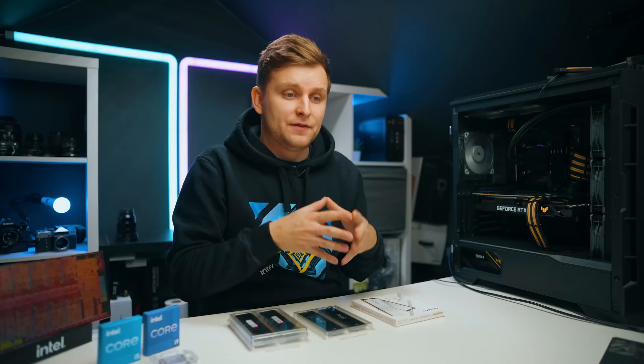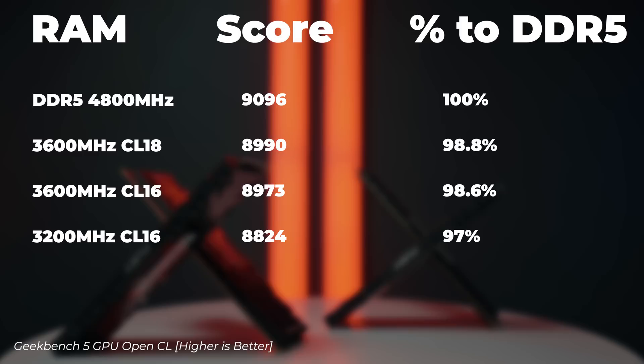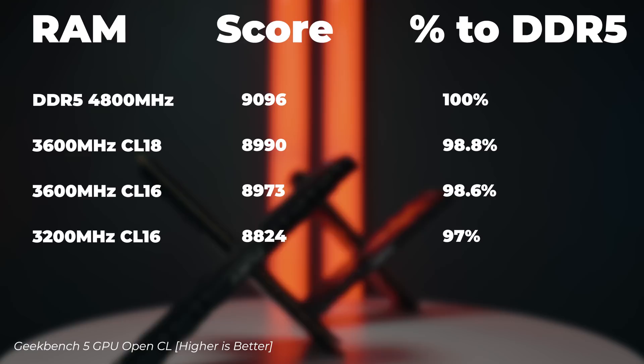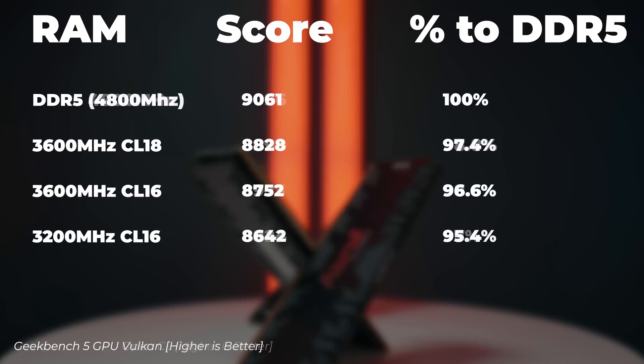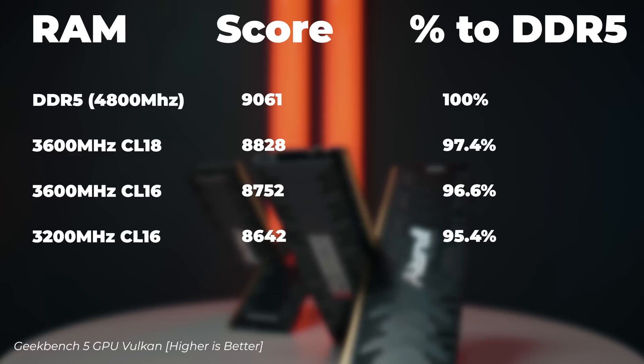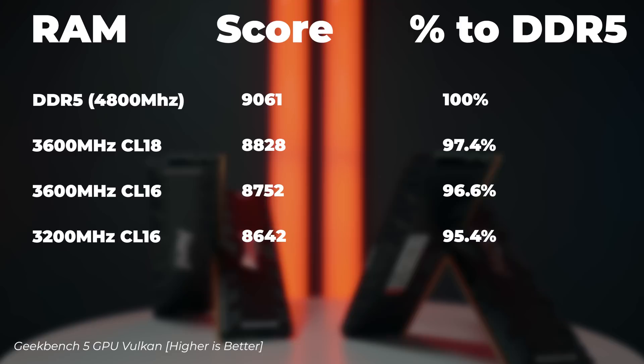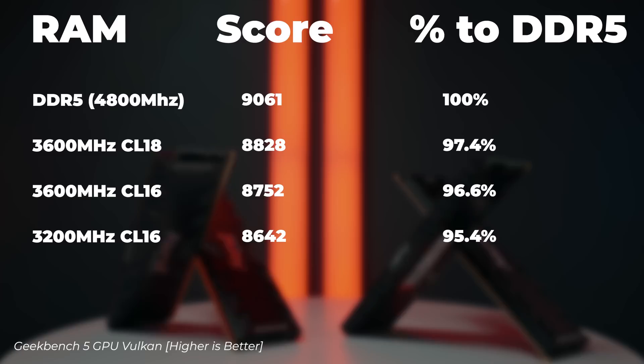An iGPU test was also conducted, since the system RAM also acts as video memory for the integrated GPU inside the CPU. Using DDR5 at 4800MHz as the baseline: in the OpenCL score, 3600MHz CL18 is 1.2% slower; 3600MHz CL16 is 1.4% slower — basically the same, with frequency more important than latency here; 3200MHz is 3% slower. In the Geekbench 5 Vulkan GPU score: DDR5 is the baseline at 100%; 3600MHz CL18 is 2.6% slower; 3600MHz CL16 is 3.4% slower; 3200MHz CL16 is 4.6% slower.